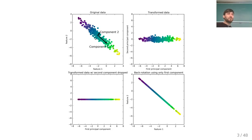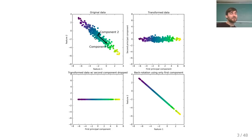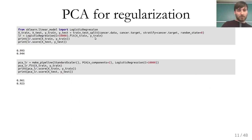Each direction is a linear combination of all the features. Each principal component contains all features as a combination. So each direction is just a sub-combination of the features.